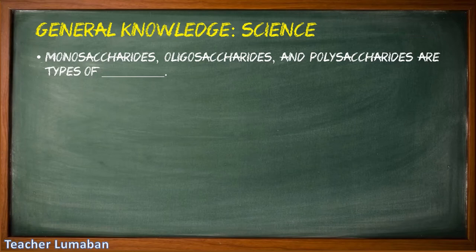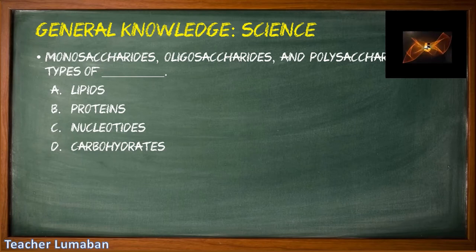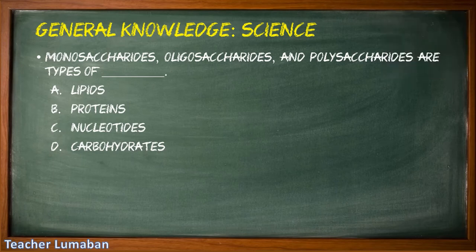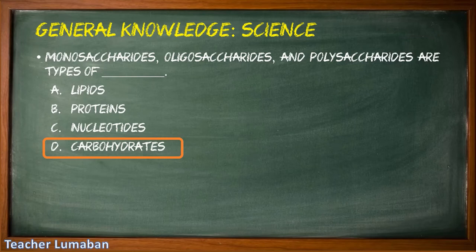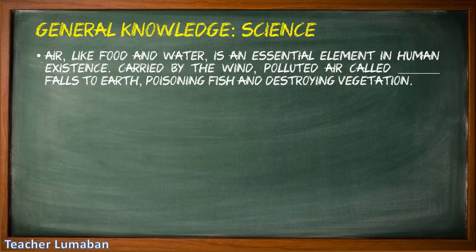Monosaccharides, oligosaccharides, and polysaccharides are types of blank. Letter A: lipids, Letter B: proteins, Letter C: nucleotides, Letter D: carbohydrates. The correct answer is Letter D: carbohydrates. Monosaccharides, oligosaccharides, and polysaccharides are types of carbohydrates. Carbohydrates are naturally occurring sugars, starches, and fiber in food. All carbohydrates are composed of sugar molecules; sugar molecules linked together form starches and fiber.